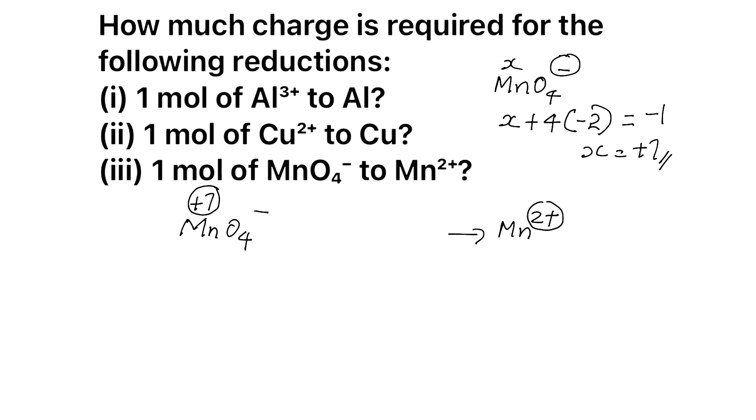So here you can see plus 7 is becoming plus 2. So how many electrons are there? 5 electrons. And here we are using 1 mol of MnO₄⁻. So 1 mol of MnO₄⁻ combined with 5 mol of electron to give 1 mol of Mn²⁺. You have to read like that.